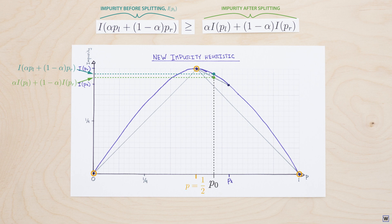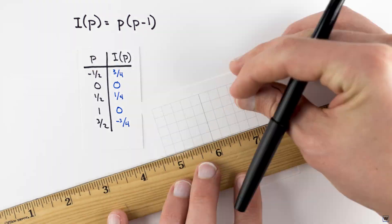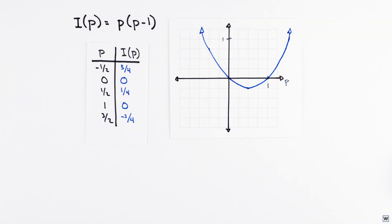The simplest function many of us learn in school that fits this description is an upside down parabola. One parabola with the roots we need at zero and one is p times p minus one. And to make it upside down, we can just add a negative sign out front.